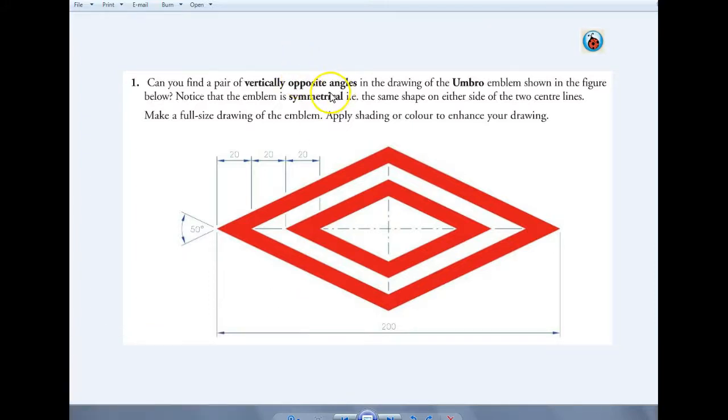Okay, so in this question we have a pair of vertically opposite angles, and it's making up an umbro sign. Now, if we look at our question...